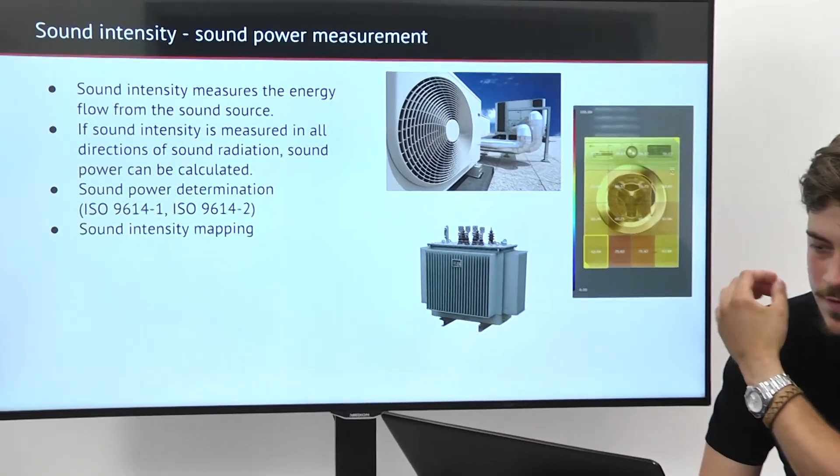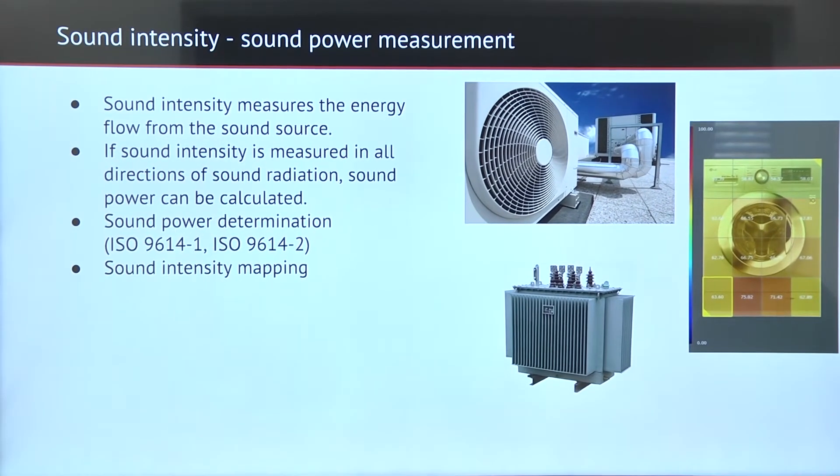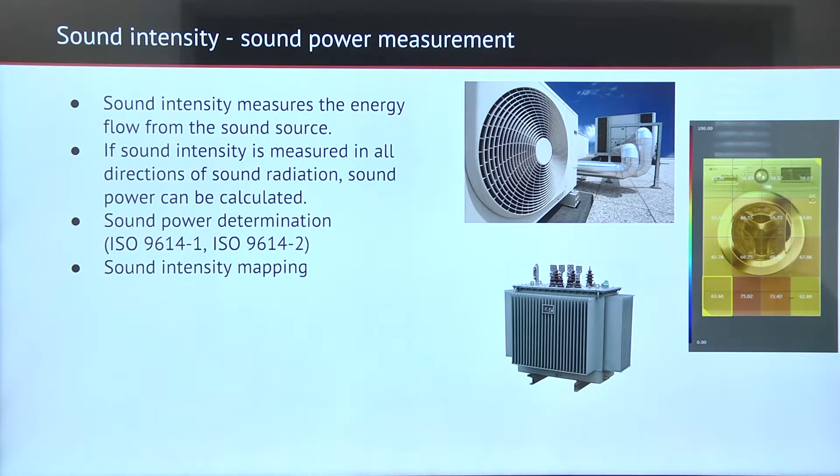Sound intensity is a flow of energy and it is possible to indirectly measure the sound power of the sound source by measuring the total energy flow from the sound source in all directions. The pressure-based sound power determination methods require a controlled measurement environment – that is either an anechoic or a reverberation room.